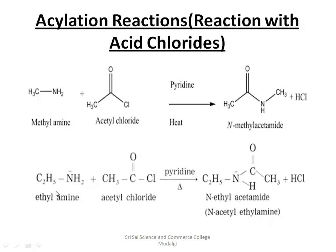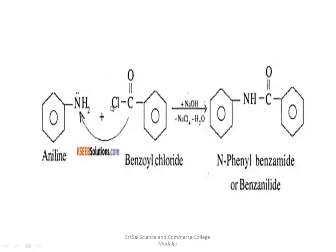Similarly, if we take C₂H₅NH₂, which is ethylamine, the same reaction gives C₂H₅-NH-CO-CH₃, forming N-ethyl acetamide. It is also called N-acetyl ethylamine. The byproduct removed here is HCl.